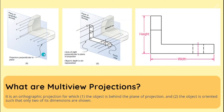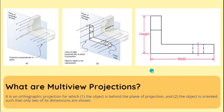This plane is called the frontal plane of projection, and the projection being created on it is what we call the front view.